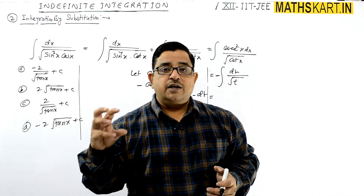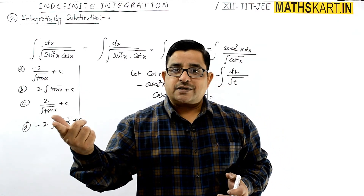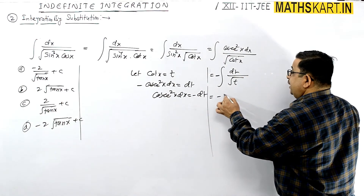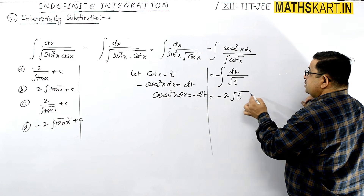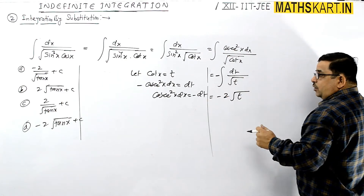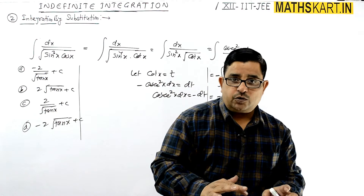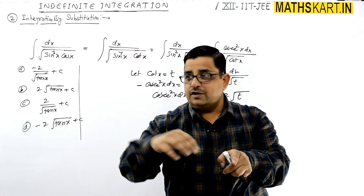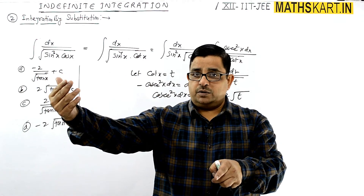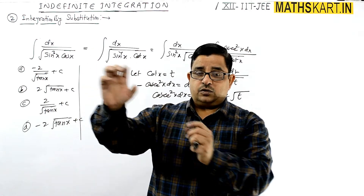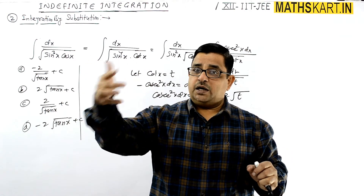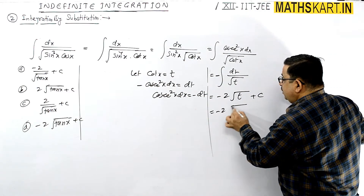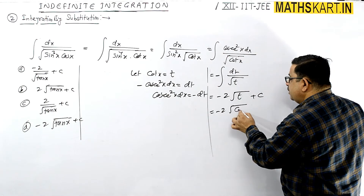As explained in the previous video, 1 upon root x integrates directly to 2 root x. So 1 upon root t integrates to give — since the derivative of root x is 1 upon (2 root x), moving 2 to the other side means 1 upon root x integrates to 2 root x. So this value becomes minus 2 root of t.